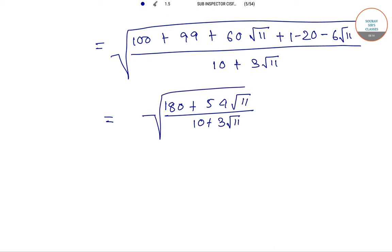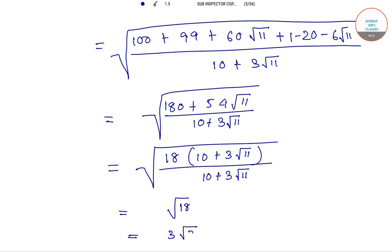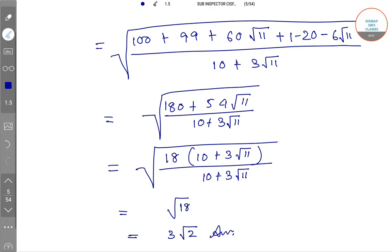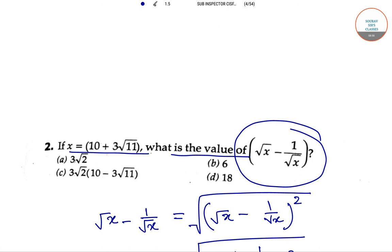From this we get root of 18 times (10 plus 3 root over 11) divided by (10 plus 3 root over 11), all under root. The terms cancel, leaving root 18, which equals 3 root over 2. So option A, that is 3 root over 2, is our answer. Thank you for watching this video.